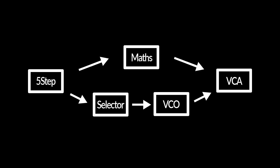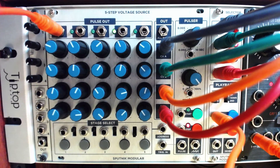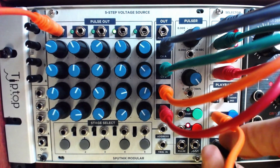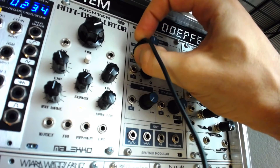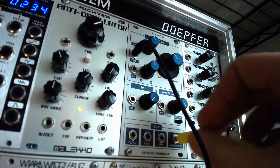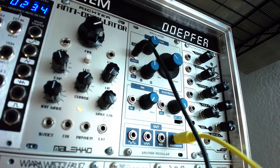Let's start with a simple patch similar to the one from our last sequencing video. Patch the rows A through D outputs from the 5-step to the corresponding inputs on the selector. Make sure to route the step 1 pulse out to the trigger input on the selector, then route the selector output to an oscillator pitch input and the oscillator out to a VCA.